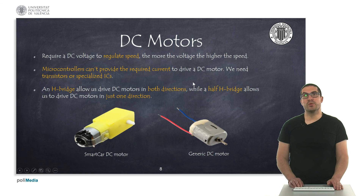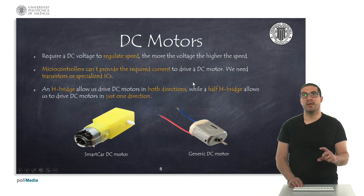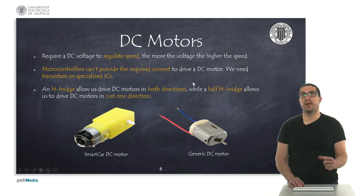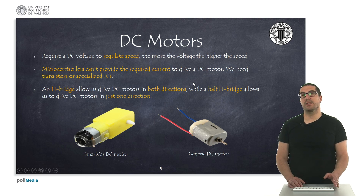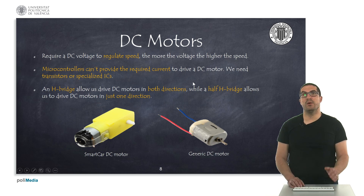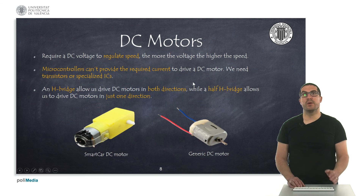Moving into motors, we have the DC motor — this is the most standard motor. We use this motor to regulate speed, so we can apply different voltages and the speed varies accordingly. What we actually need is to provide current and we can regulate torque, but in most homemade projects we use these motors simply for regulating speed. Because they consume quite a lot of current, we can't provide that current directly from a microcontroller pin — we need a driver. Basically, we need what is known as an H-bridge or half H-bridge to allow the microcontroller to control how the current drives into the motor.